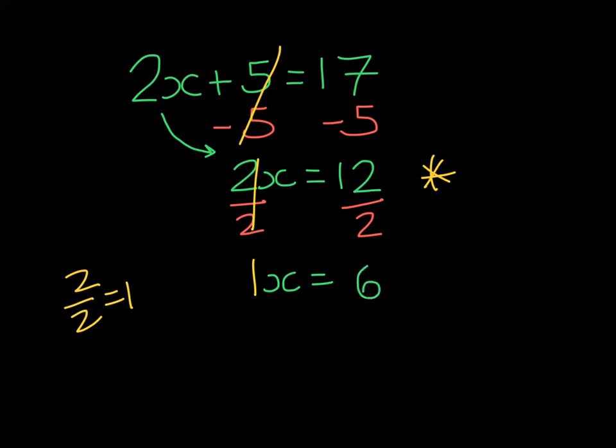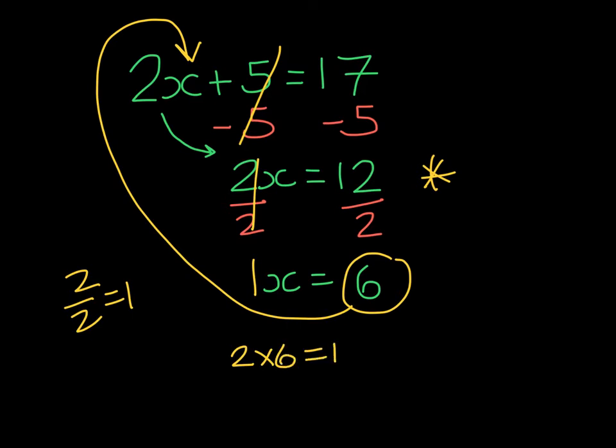At this point, we can take our solution, substitute it into the original equation, and check. 2 times 6 gives us 12. If we add 5, do we get 17? Yes, we do.